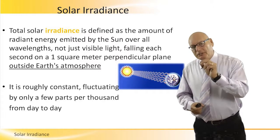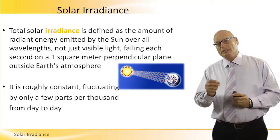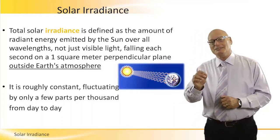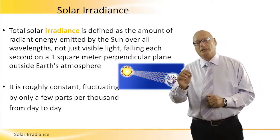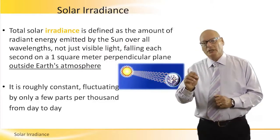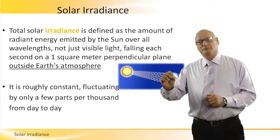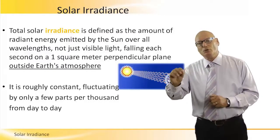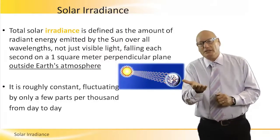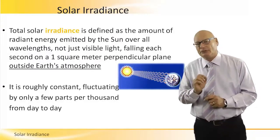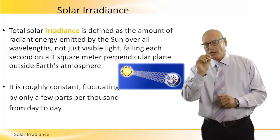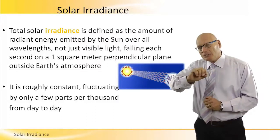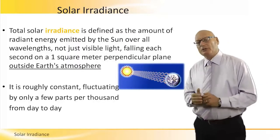We're getting into some T terminology, and the first one is solar irradiance. Total solar irradiance is defined as the amount of radiant energy emitted by the sun over all wavelengths — not just visible light — falling each second on a one square meter perpendicular plane outside Earth's atmosphere. We put an emphasis on outside Earth's atmosphere. Solar irradiance is the amount of energy that gets to the boundary of the atmosphere.